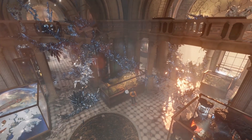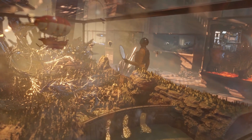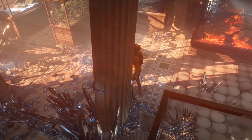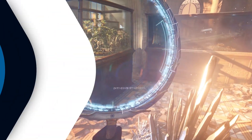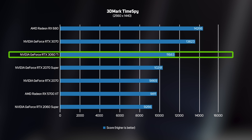We also ran the 3DMark TimeSpy benchmark on all of the cards. Despite this being a synthetic benchmark rather than a real game, TimeSpy is popular with gamers as it's so easy to run, so it is worth including the results here. The results are output as a score with a higher number indicating faster performance. As we saw in the real game benchmarks, the RTX 3060 Ti is much faster than similarly priced previous generation RTX 20 series GPUs.